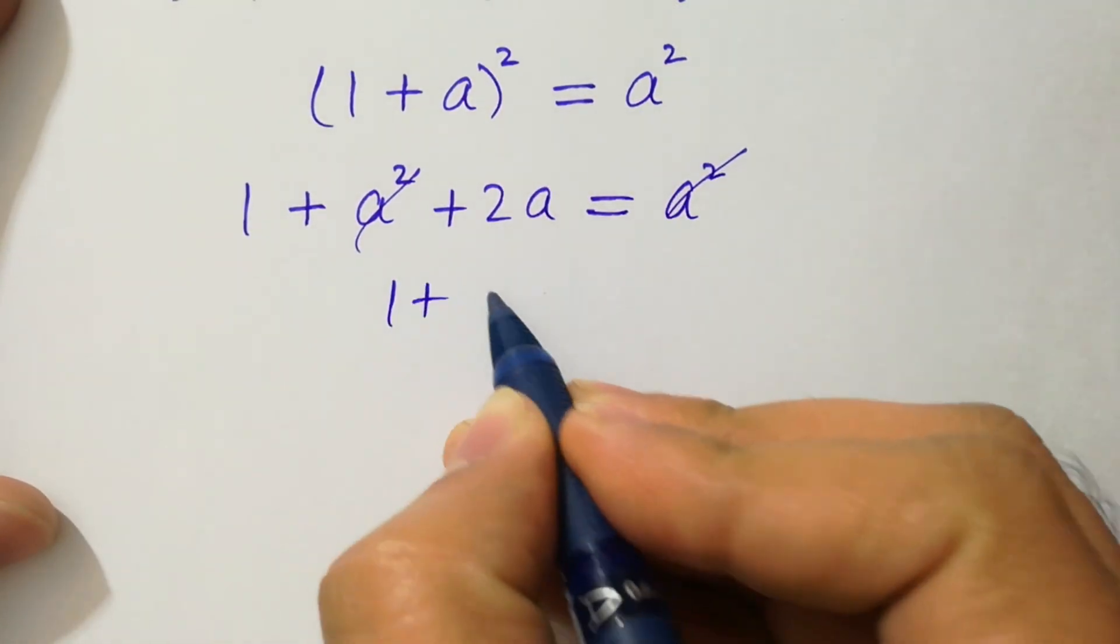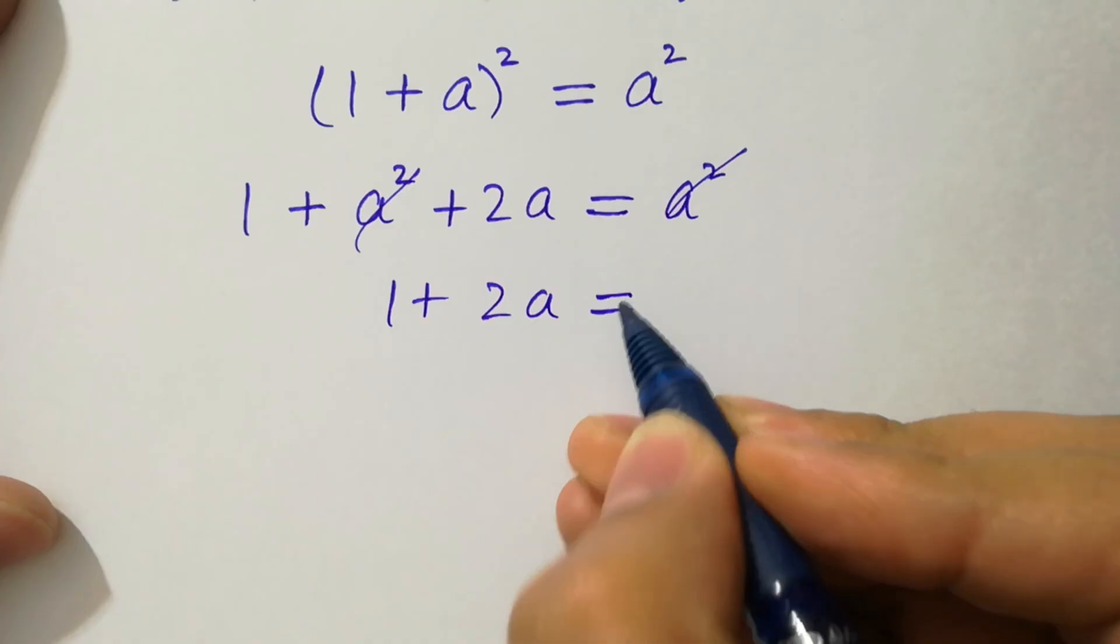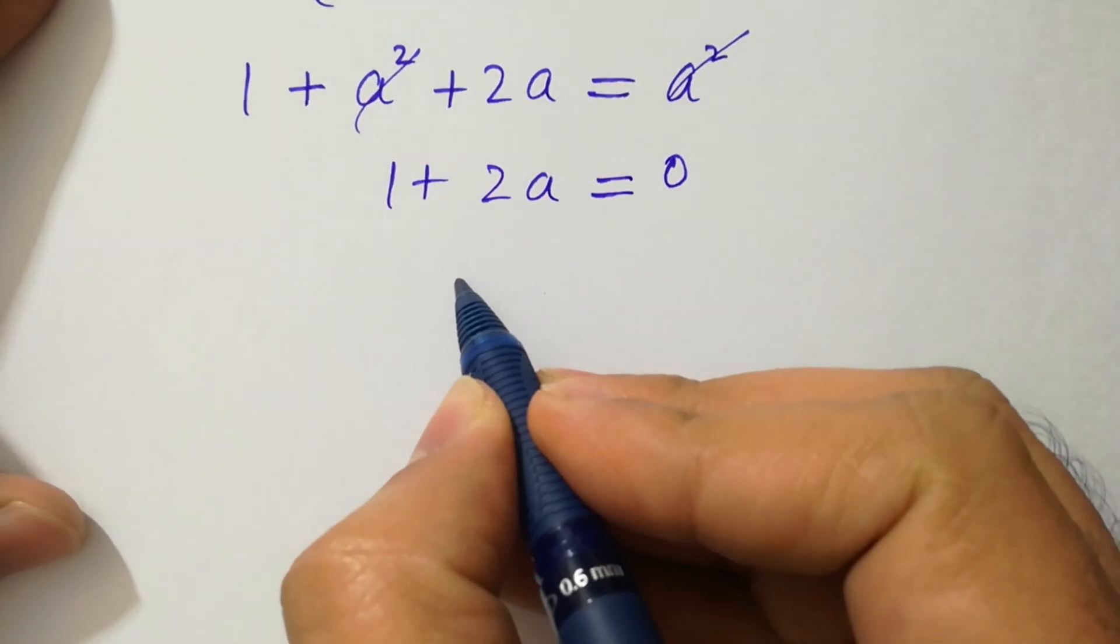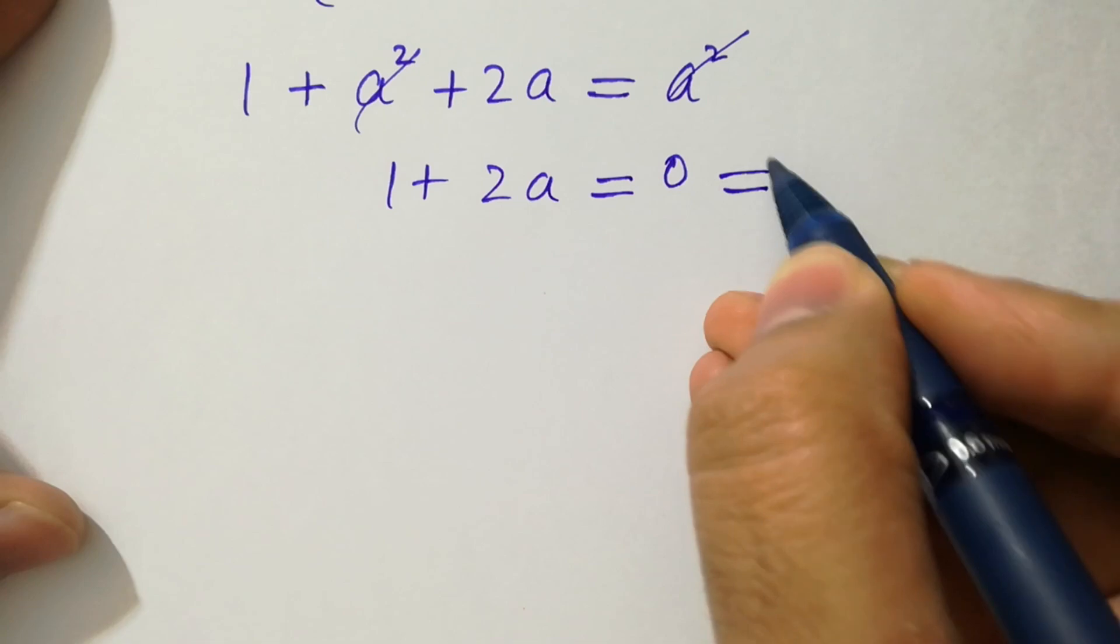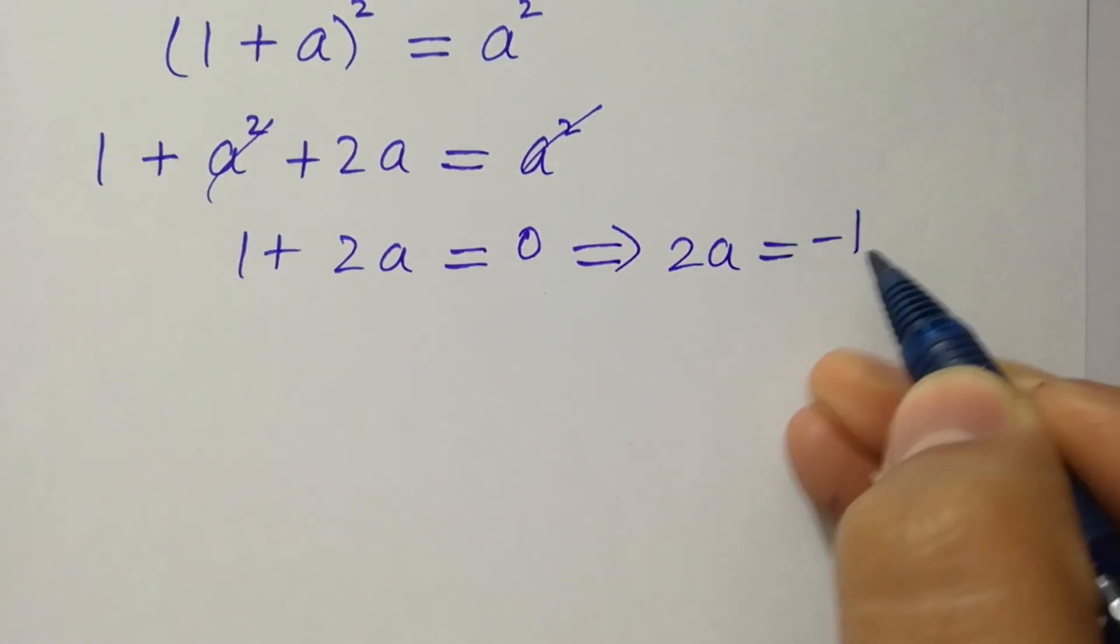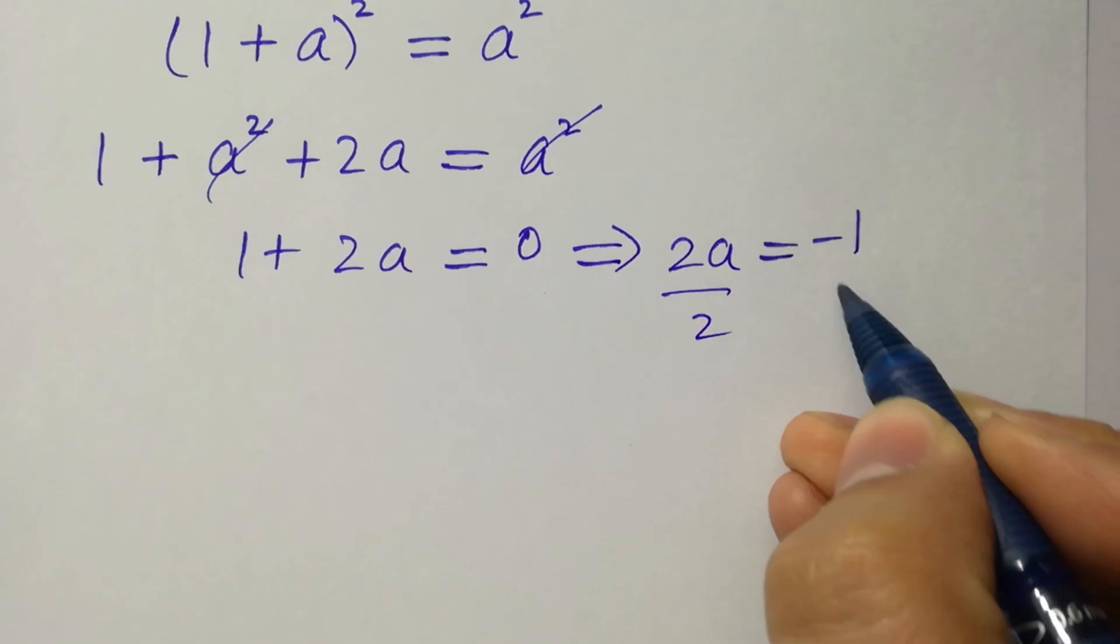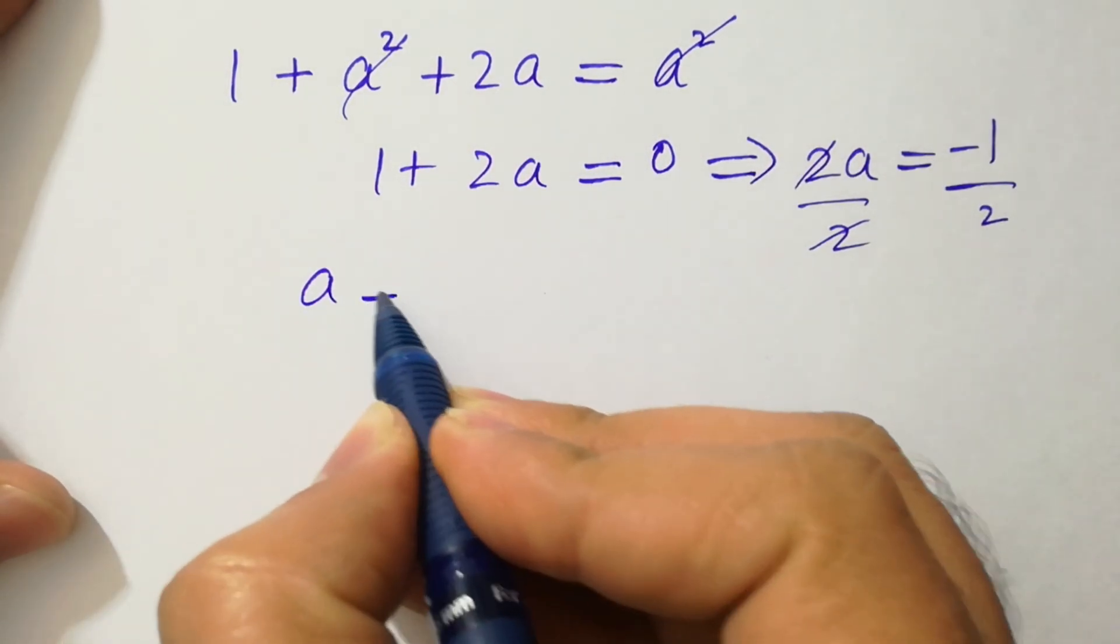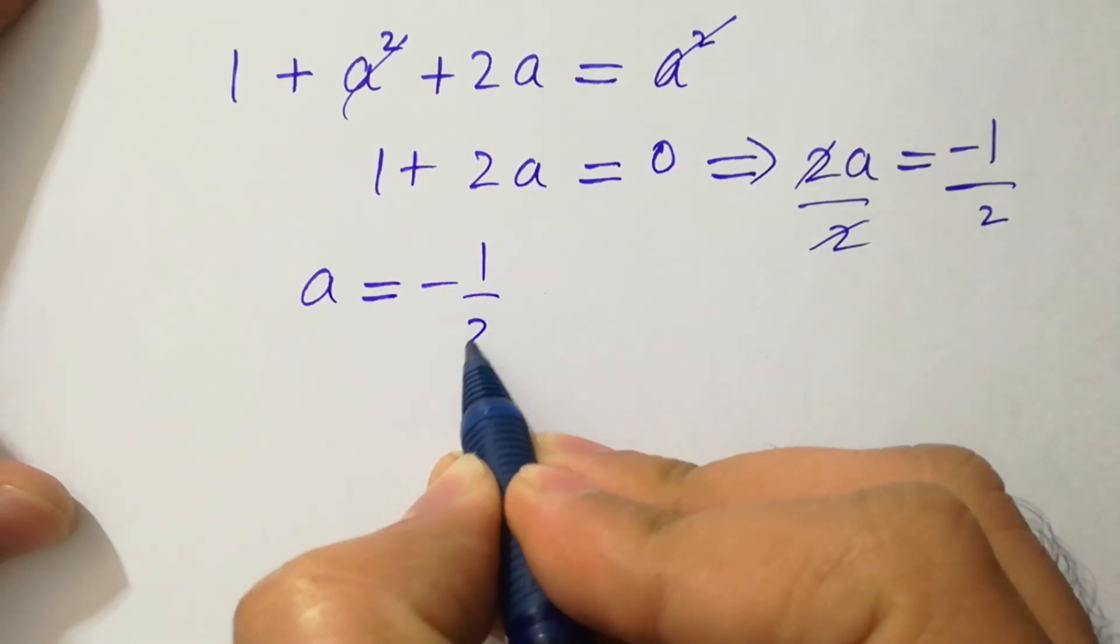When a squared cancels, 1 plus 2a equals 0. 2a equals minus 1, divided by 2 on both sides, 2 cancels. We get a equals minus 1 over 2.